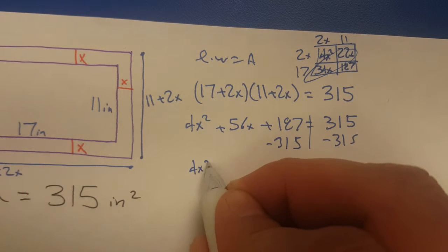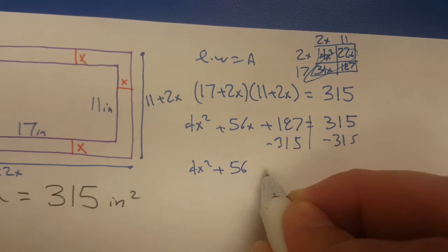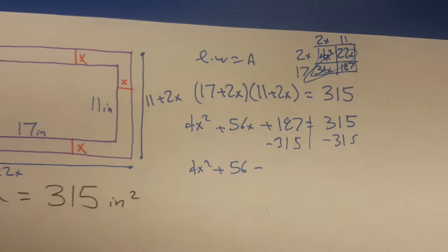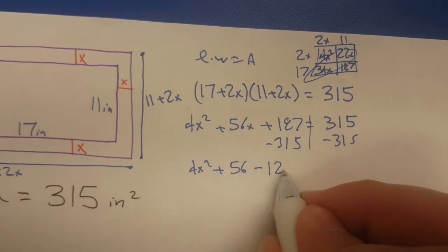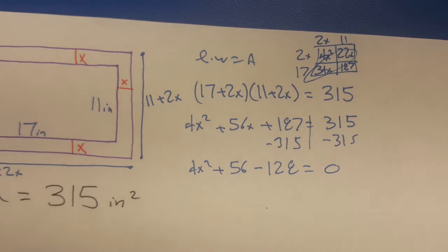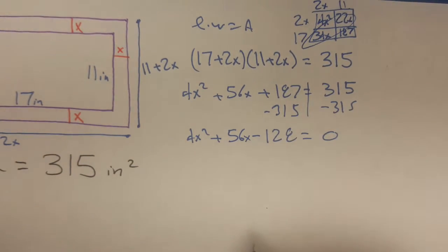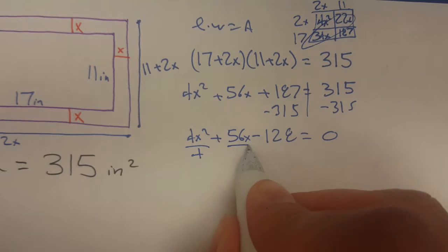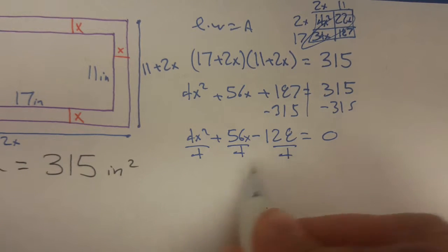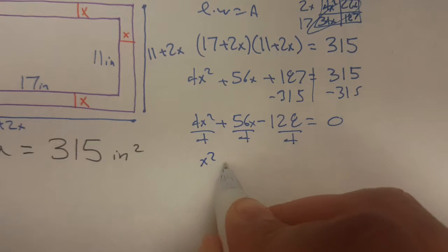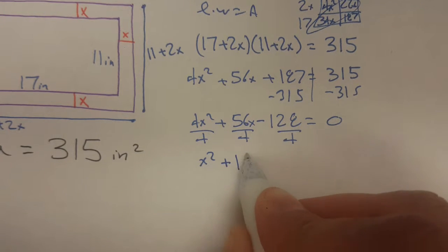Rewrite, subtract 315 from both sides. Now it's going to be equal to zero. Still got the 4x squared plus the 56x. 187 minus 315 is negative 128. Now it equals zero, so now we can factor it. All of these have an extra 4, so I'm going to factor out that 4.